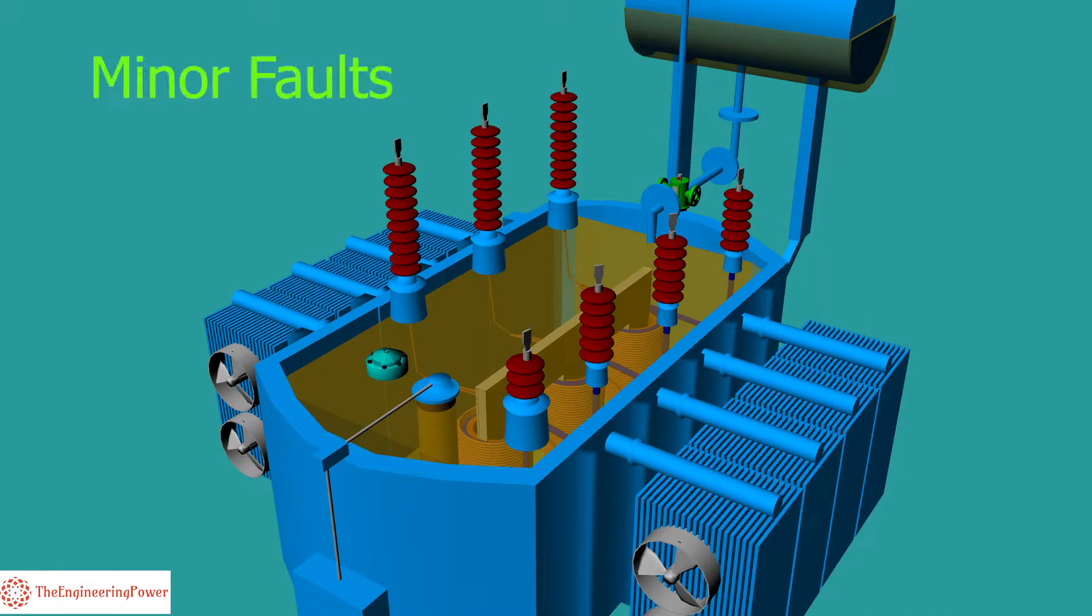In case of minor faults inside the transformer, such as insulation failure between turns, breakdown of core of transformer, core heating and defective joints, the oil present inside the transformer tank gets decomposed and gases are produced as a result.